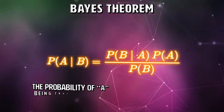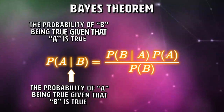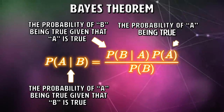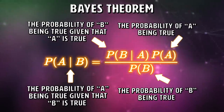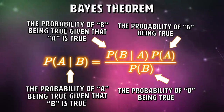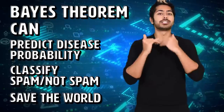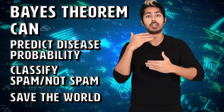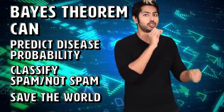Bayesian statistics, however, does take into account new evidence. We can illustrate it using Bayes' theorem, where E is the evidence and H is the hypothesis. The probability of the hypothesis given the evidence equals the prior probability multiplied by the likelihood of evidence E if the hypothesis is true, divided by the prior probability that the evidence itself is true. Bayesian stats takes everything into account — we use it whenever we feel our prior data won't be a good representation of future data. It supports conditional probability, can help predict the probability of someone having a disease given their age, identify spam emails, and was even used to help crack the Enigma machine in World War II.